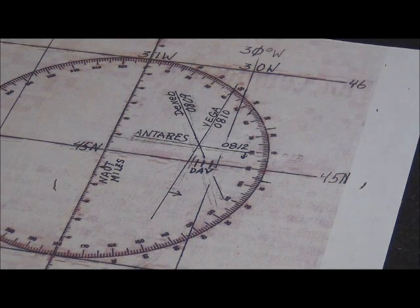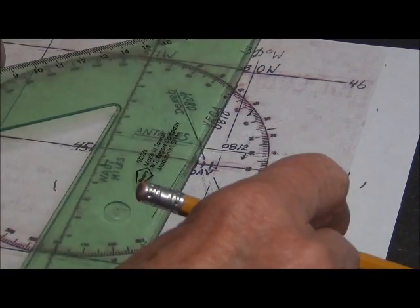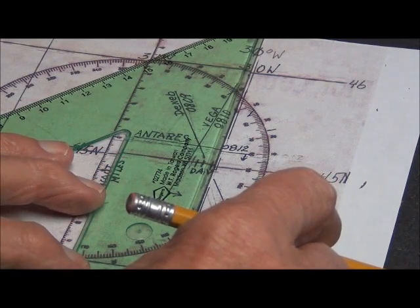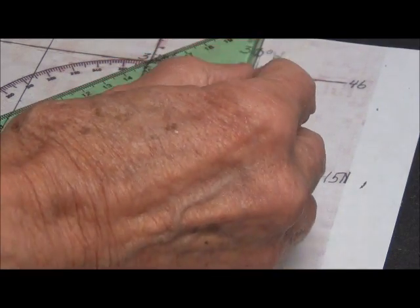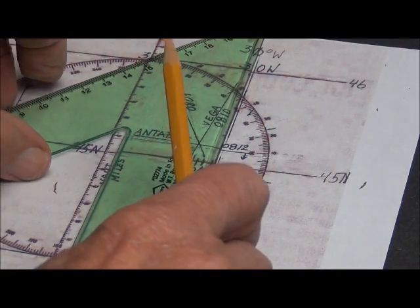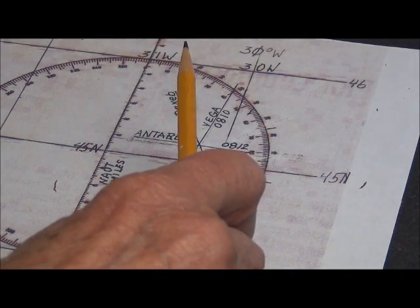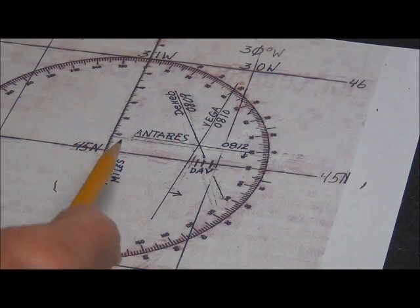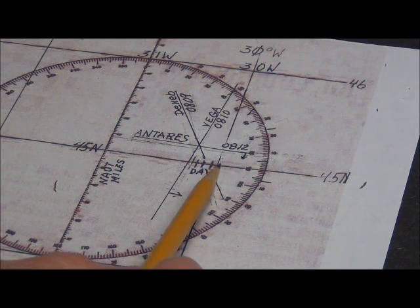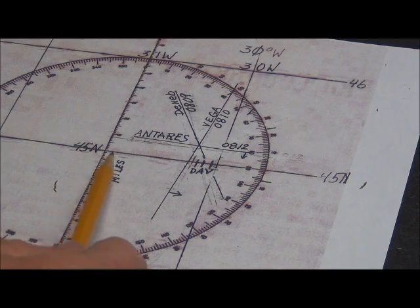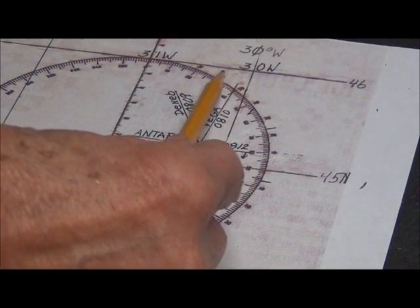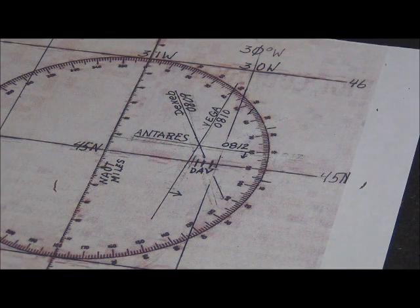So then we take a straight edge and make a meridian there. Now that meridian is the correct ratio for this latitude, 45 north. This distance and this distance is correct for this Mercator chart.